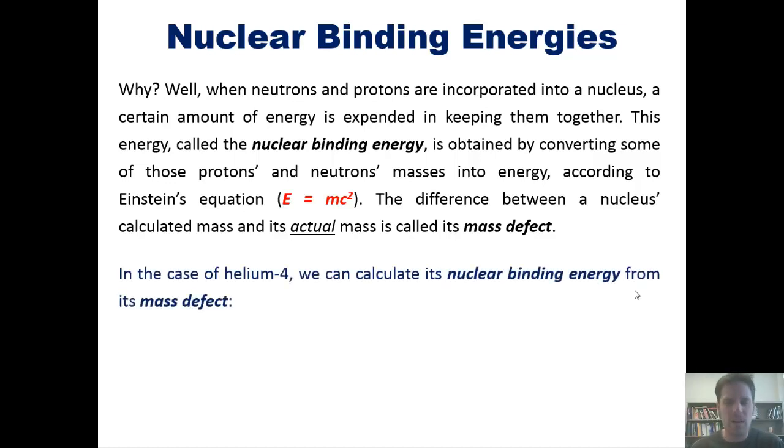In the case of helium-4, we can calculate its nuclear binding energy from its mass defect like this: ΔE = Δm·c². Once again, c² is the constant speed of light squared, so we're really focusing on Δm.